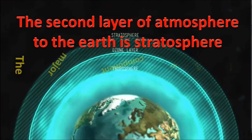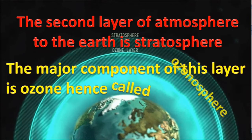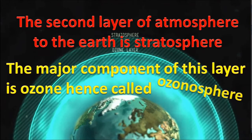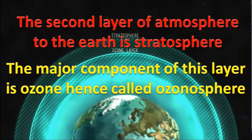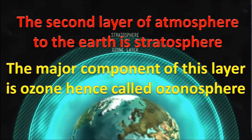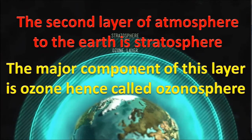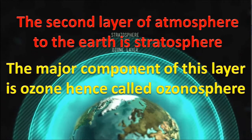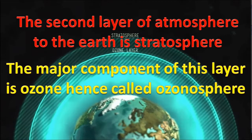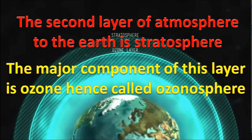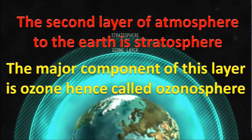The second layer of atmosphere from the earth is stratosphere. The major component of this layer is ozone molecule. Hence, this layer is also called the ozonosphere. It ranges from 16 to 50 km.